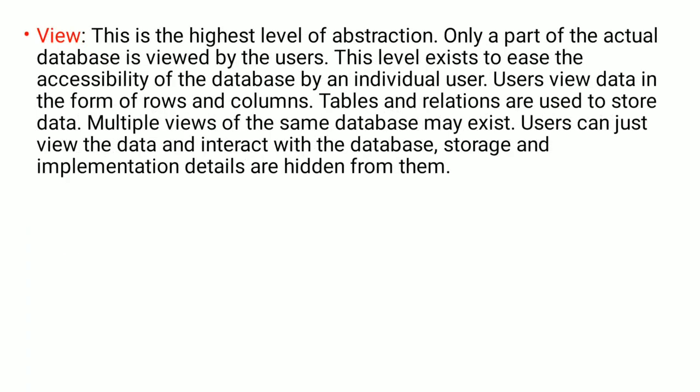The next level is view level. This is the highest level of abstraction. Only a part of the actual database is viewed by the users. This level exists to ease the accessibility of the database by an individual user. Users view data in the form of rows and columns — tables and relations are used to store data. Multiple views of the same database may exist. Users can just view the data and interact with the database.